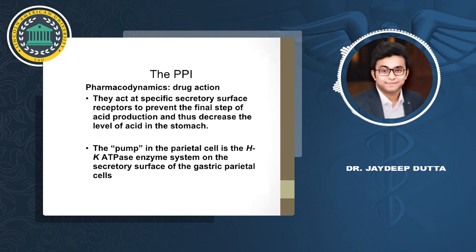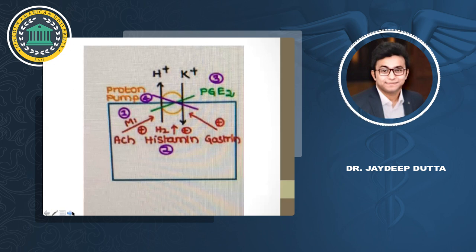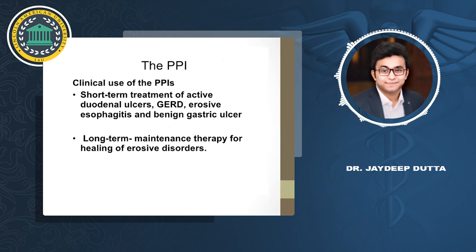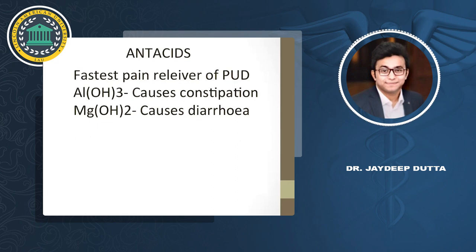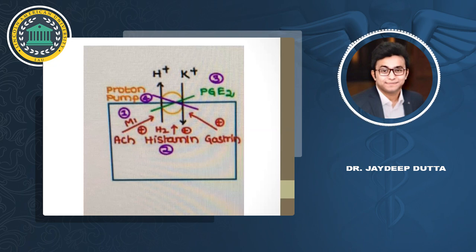PPIs act at a specific secretory surface to prevent the final step of acid production in the stomach — this is the main reason they are called hit-and-run drugs. The H+/K+ ATPase pump is what we inhibit with PPIs. Clinical uses: PPIs are the drug of choice for GERD, esophagitis, benign gastric ulcer, Zollinger-Ellison syndrome, and long-term maintenance therapy of erosive disorders. Antacids will be discussed in the next class — if anyone has doubts, they can ask in the next lecture.